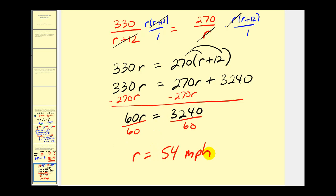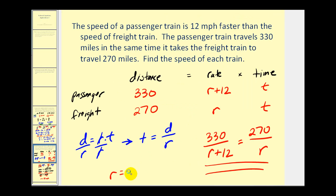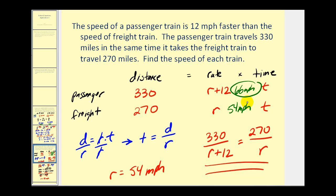Let's go back and make sure we answer the question. We found that r equals 54 miles per hour. The question asks for the speed of each train. The freight train's rate is r, so that's 54 miles per hour. The passenger train would be going r plus 12, so 54 plus 12 is 66 miles per hour. It's important to go back and make sure we answer the question once we've solved for the specific variable.